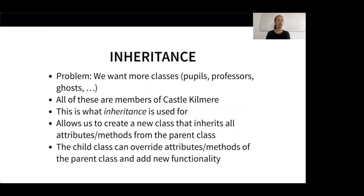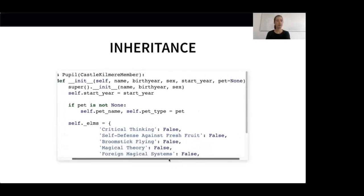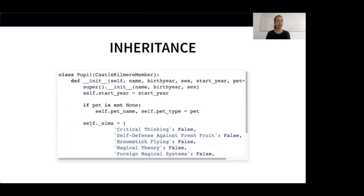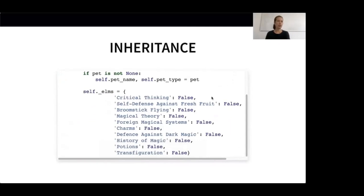Let's use the concept of inheritance to create a Pupil class. This new class inherits from our CastleKilmer member class. In the __init__ method of this new class we use the method super to call the __init__ method of the parent class, which initializes the name, birth year and sex. Then we add new attributes specific to our pupils — for example, the pupils started school in a certain year and they might own a pet. We added another attribute called ELMS, which stands for elementary level of magic, and it contains all the obligatory classes a pupil has to take. When creating a new pupil, she won't have passed any ELMS yet.